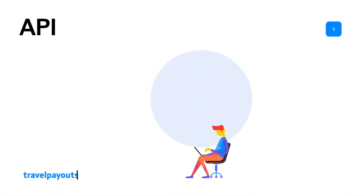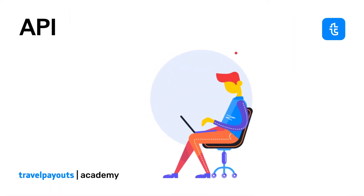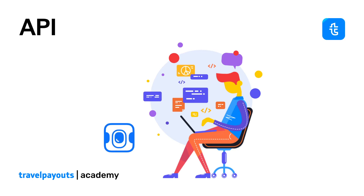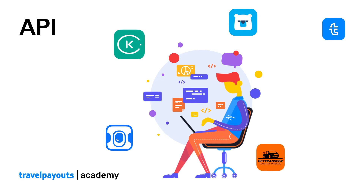With Travel Payouts, you get access to APIs from brands such as Aviasales, Kiwi.com, GetTransfer, Discover Cars, Tickets, and others. API allows you to send queries and receive useful information about flights, hotels, car rentals, activities, excursions, and more.